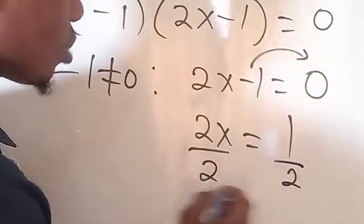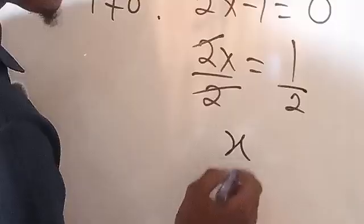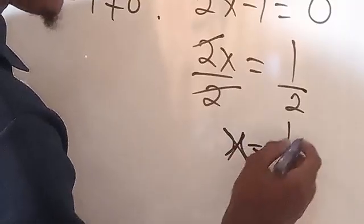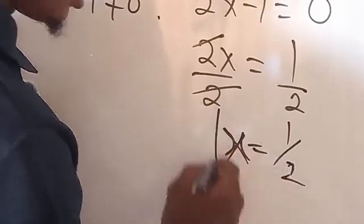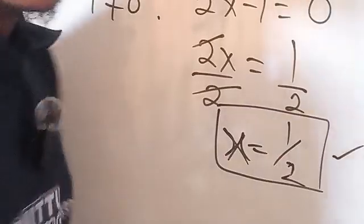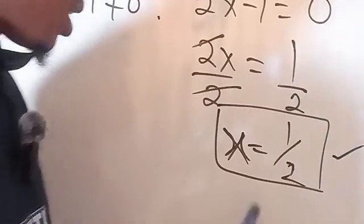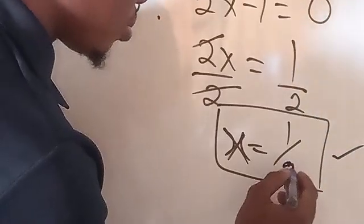Then divide both sides by 2. This will cancel this. We have x to be 1 over 2. So we have x to be 1 over 2. So x equals 1 over 2 is the solution to the problem here.